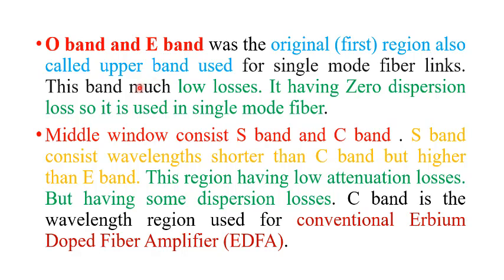To summarize: the upper band, O band and E band, were the original first bands used for single mode fiber due to zero dispersion loss and very low losses. The middle band, S band and C band — where S stands for short wavelength and C for conventional or erbium window — has low attenuation but some dispersion, requiring a dispersion compensation device. The C band wavelength region is used for conventional erbium doped fiber amplifiers.